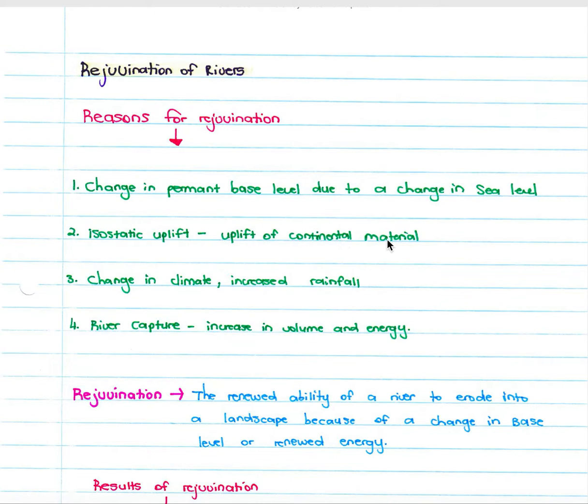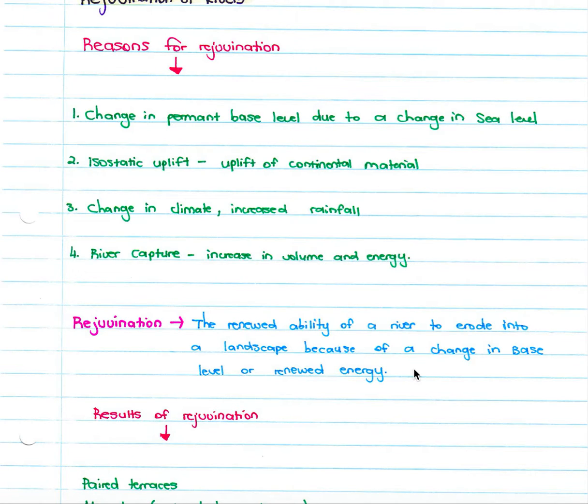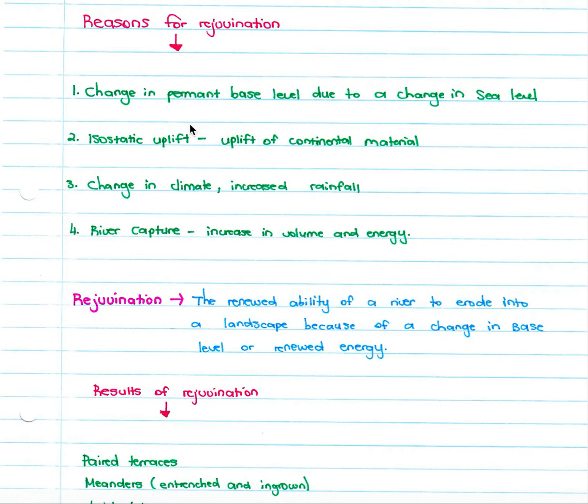Isostatic uplift or the uplift of continental material will also lead to the rejuvenation of a river as the river tries to get a graded profile, which is disrupted by isostatic uplift. Changing climate or increased rainfall give the river increased energy and therefore will rejuvenate its ability to erode into the land. And river capture, where there's an increase in the volume and energy of a river, will lead to more possibility for erosion and therefore rejuvenation. Rejuvenation is simply the renewed ability of a river to erode into a landscape because of a change in base level or renewed energy.